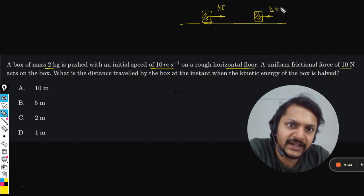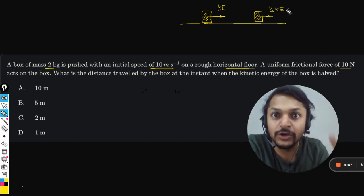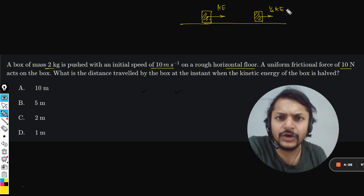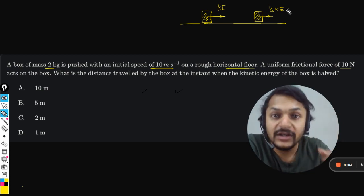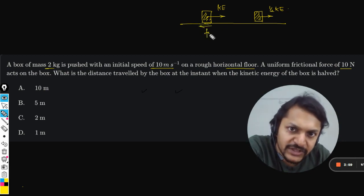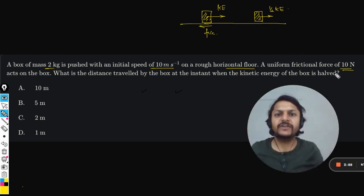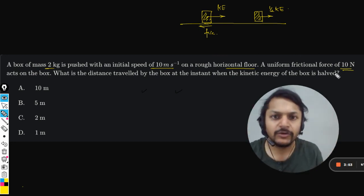Where has it been lost? It's lost in doing work against friction. There is this friction force that is opposing, and it is given that friction is a constant value of 10 Newtons.